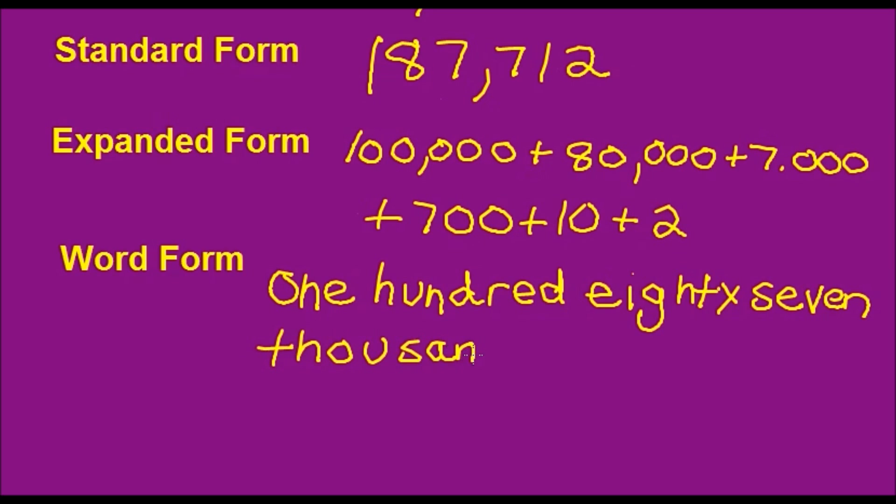And just like we separate number periods with commas, we'll separate this with a comma. And then this ones period, we have 712. We don't usually write 712 ones. We just write 712. And that's it. Word form.